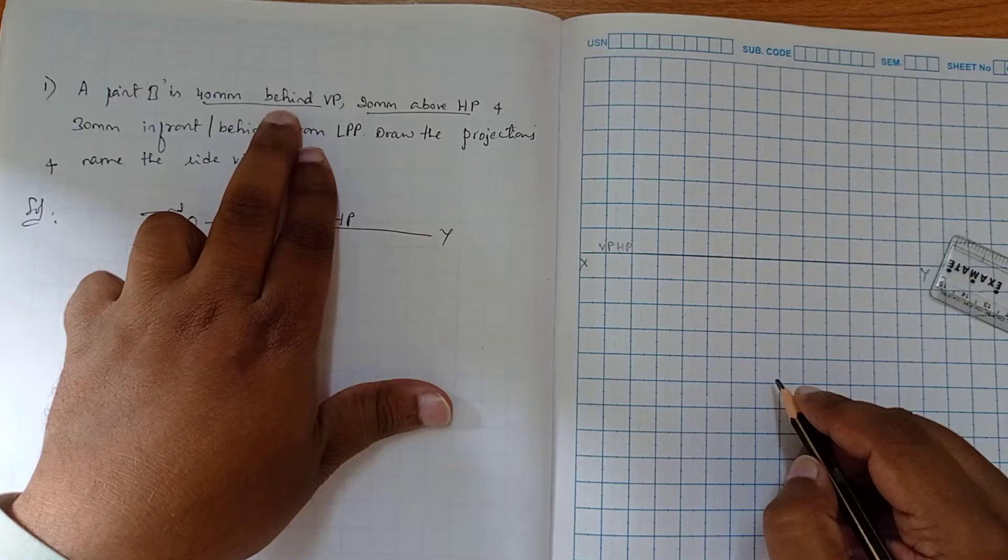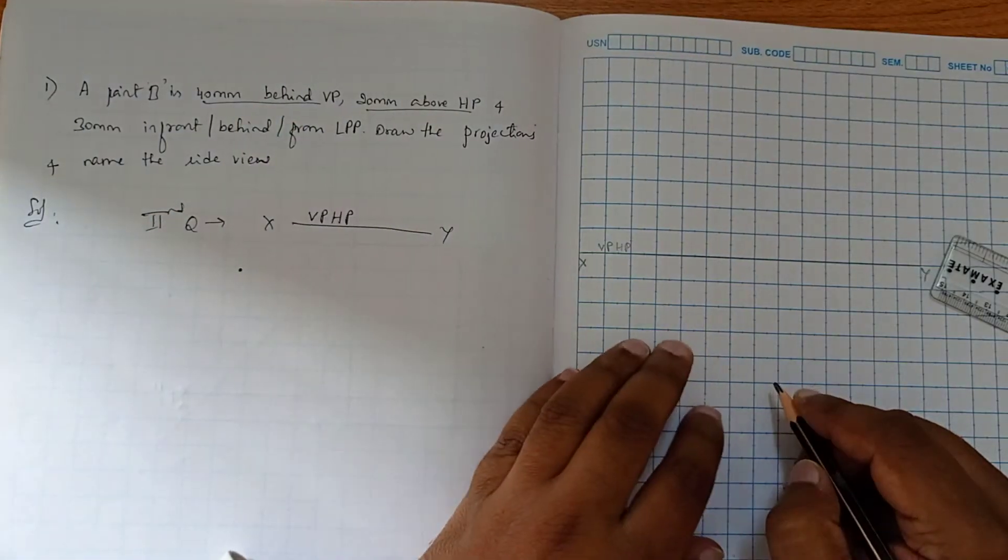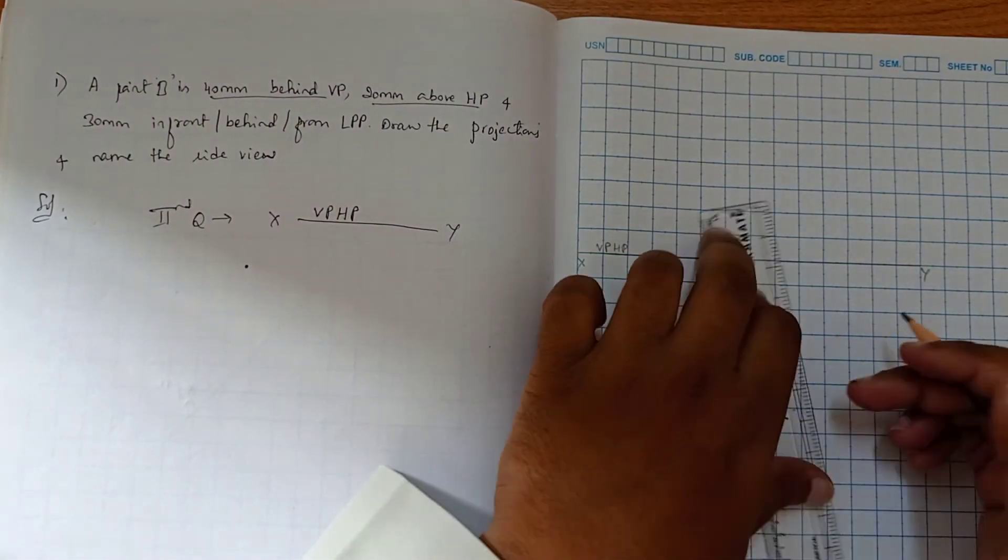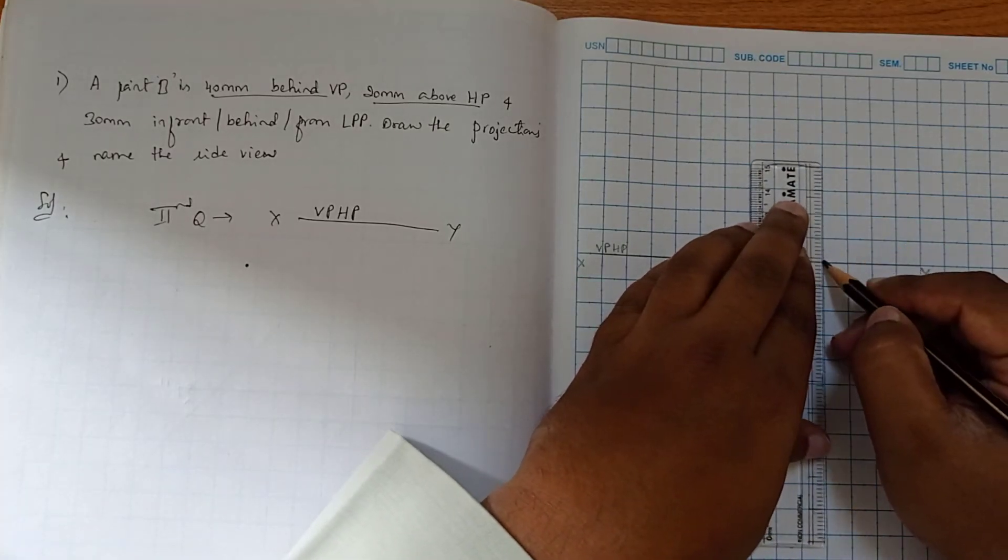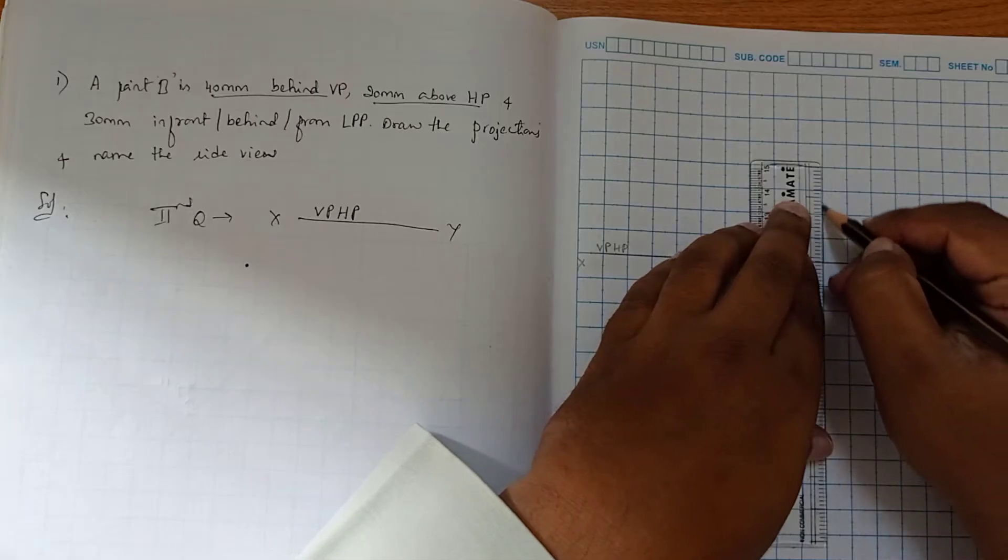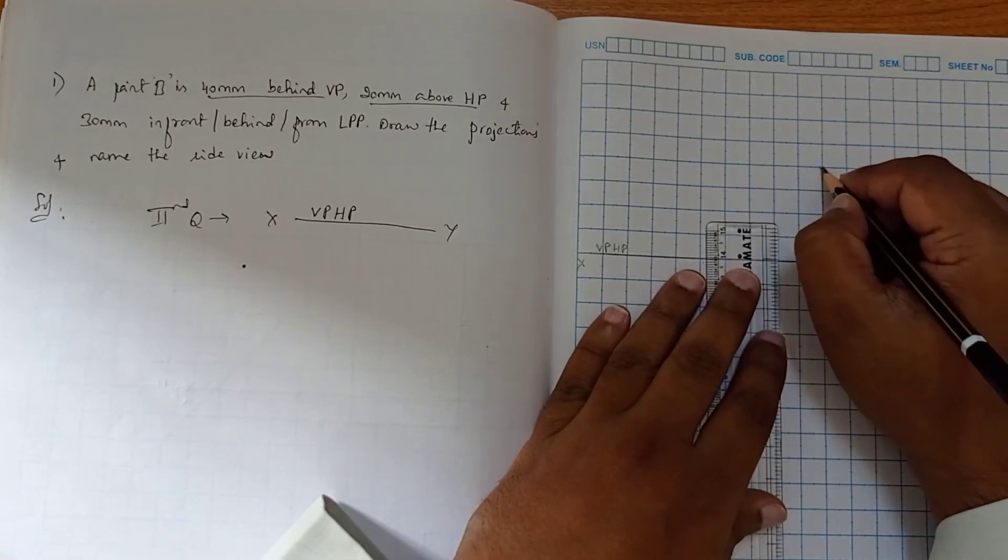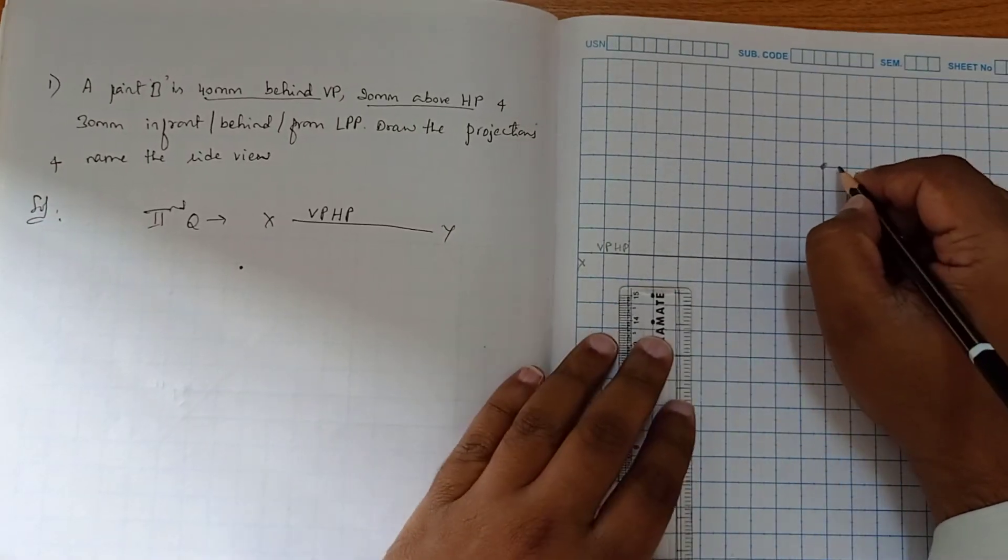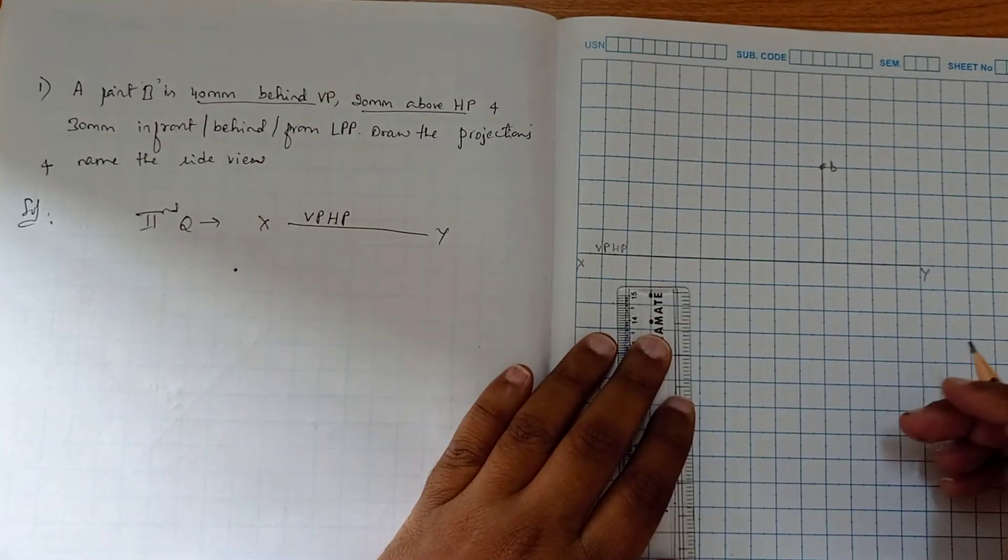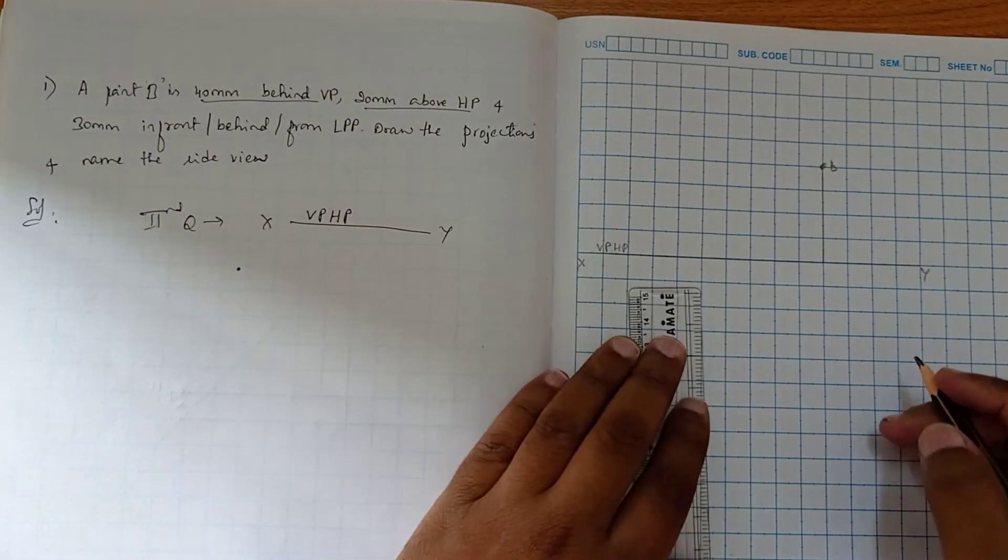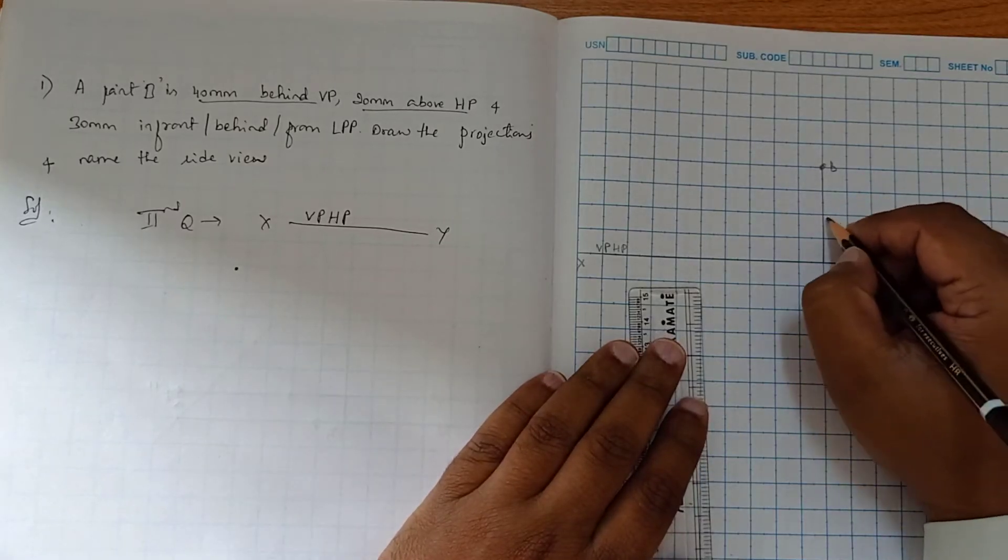So I will be drawing here 40mm, four boxes, so it is small b for the top view. Now 20mm above HP - above HP means it is the front view, so in the same collinear line we can mention 20mm, two boxes. It is B dash.